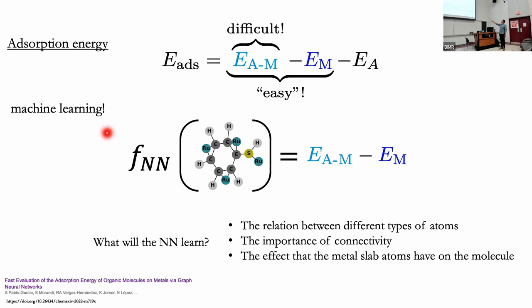According to chemistry, the graph should contain the entire information of our process. So instead of doing DFT simulations, we try to pass it through machine learning. To predict the adsorption energy, we have three terms: the interaction between adsorbate and metal, the metal energy, and the adsorbate molecule in gas phase. The difficult one is the energy of the adsorbate on the metal. When we initially plugged in machine learning algorithms to predict this directly, we failed drastically. But when we predict the difference between the adsorbate-metal system and the bare metal, this becomes much easier to predict and we can train highly accurate models.